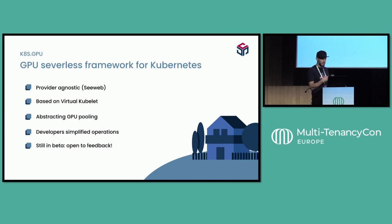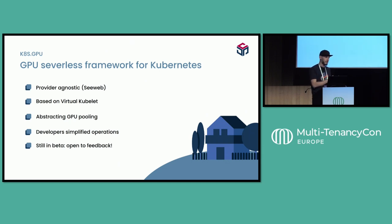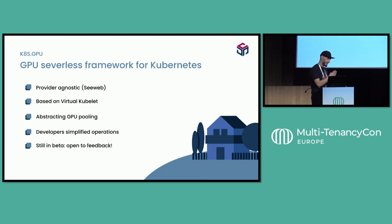With CatesGPU, we are providing a way to install a virtual kubelet in your cluster, and this virtual kubelet deploys GPU workloads on a shared cluster that is multi-tenant aware. You can have everything on AWS EKS, AKS, or any other cloud provider — without GPUs, because they're expensive — and achieve GPU pooling thanks to multi-tenancy. We abstract all the complexity of managing GPU instances in a Kubernetes cluster.